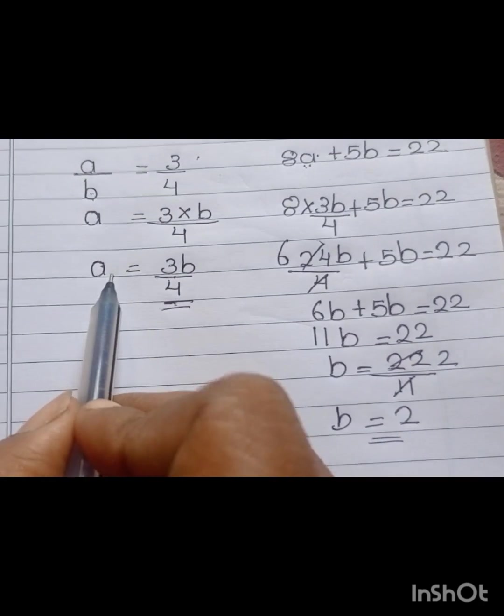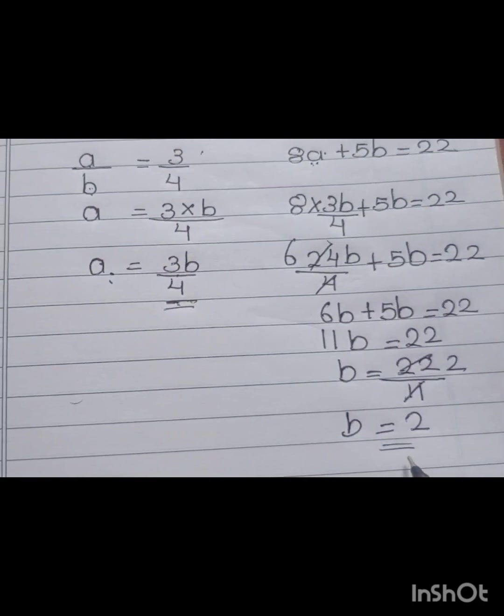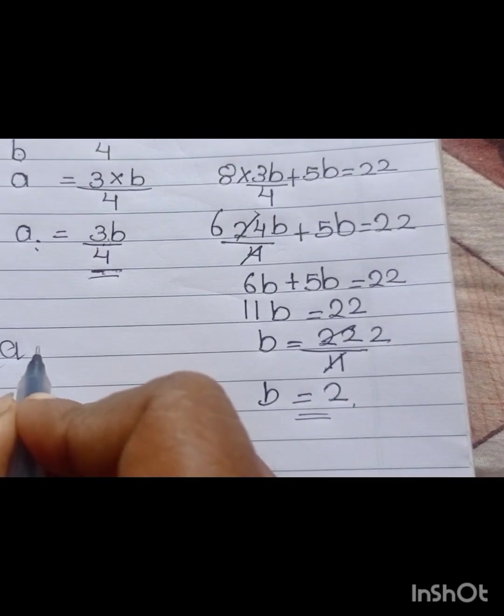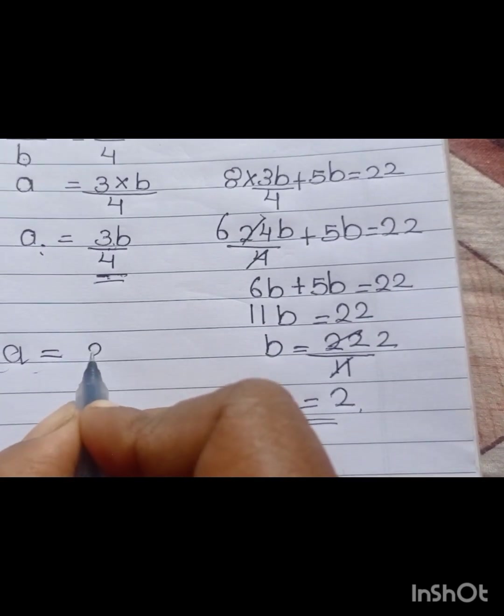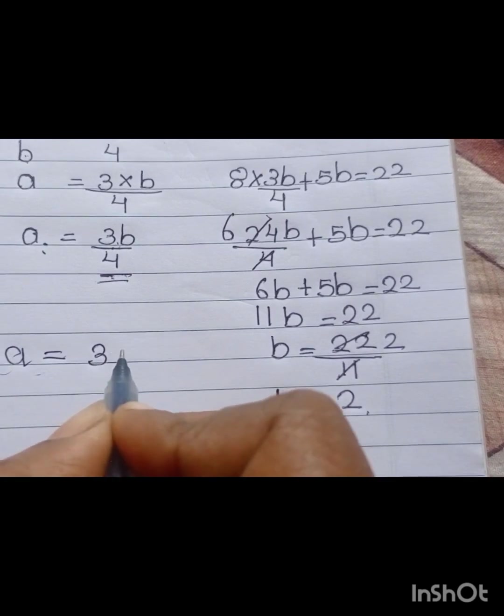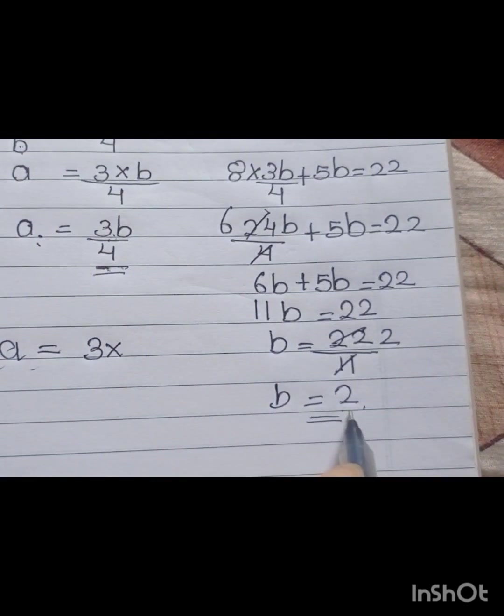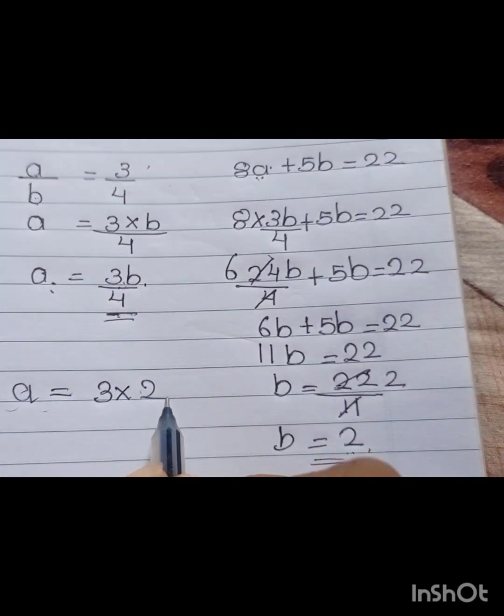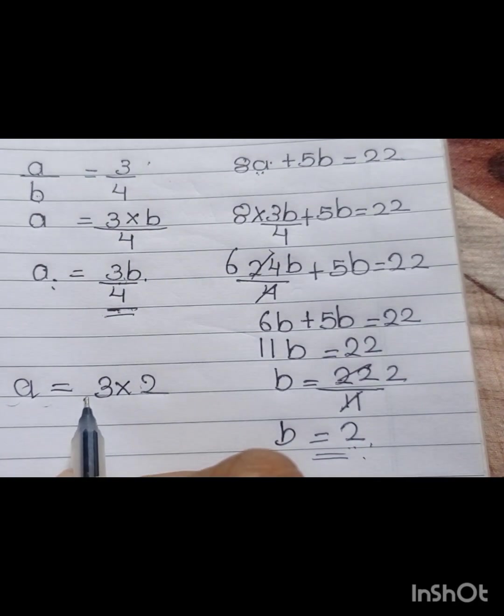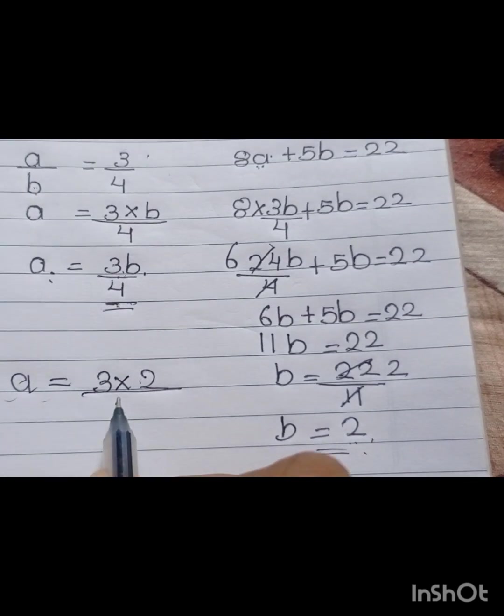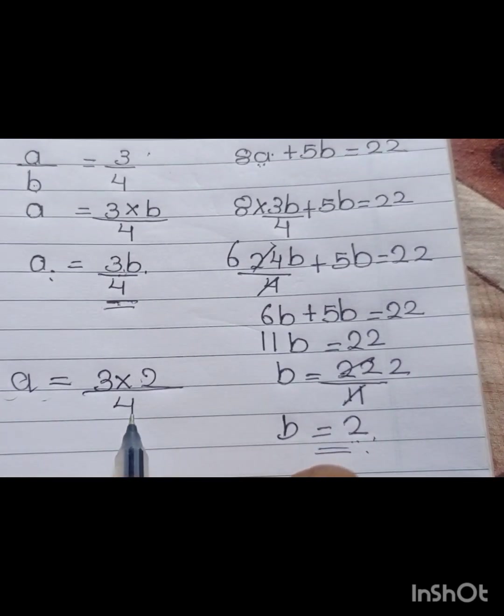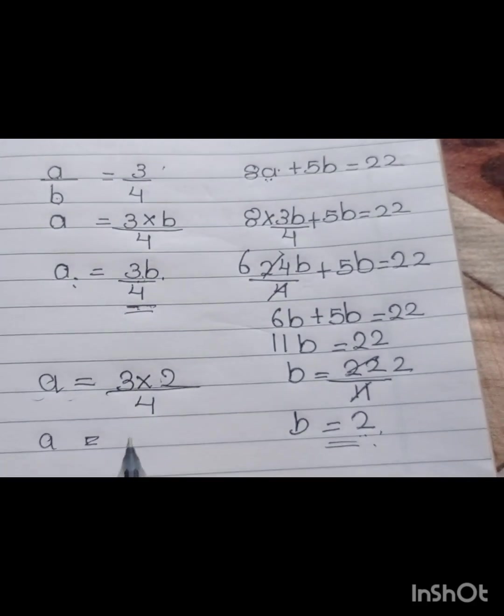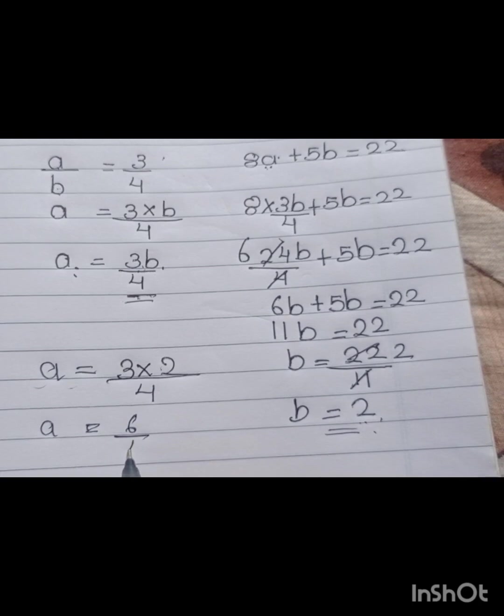Then, we are going to put this 2 in the place of B. A is equal to 3 into 2 by 4. We get 3 into 2 in the place of B, divided by 4. A is equal to 6 by 4.